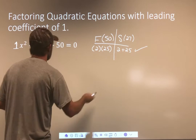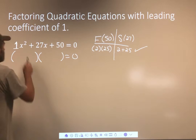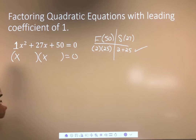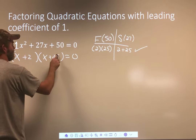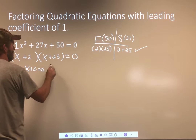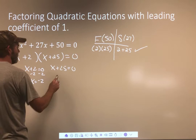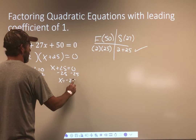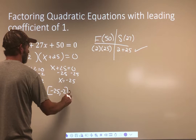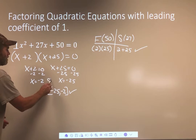Create my binomial times binomial. x² is x times x. Bring over the positive 2 and the positive 25. Separate and solve each individually. I'll get x is negative 2 and x is negative 25. We can write the answers from least to greatest — accordingly. It's up to you.